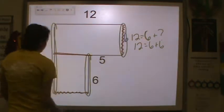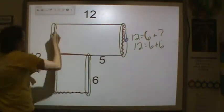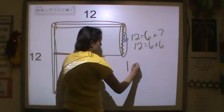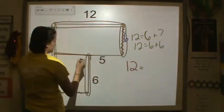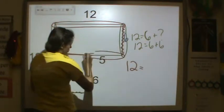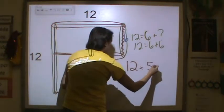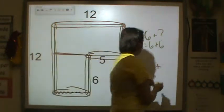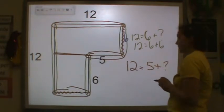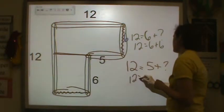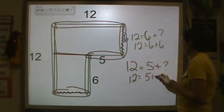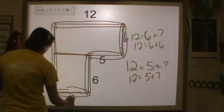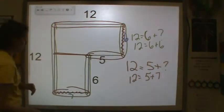Now let's do the lengths. The big long side is equal to the two short sides together. I have a short side of 5 and a missing short side. 12 is equal to 5 plus 7, so this missing side down here has to be equal to 7.